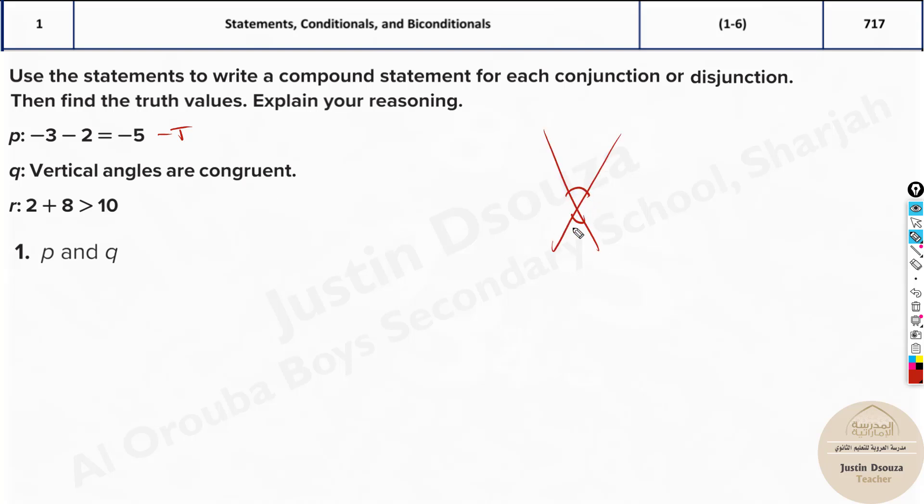Vertical angles are congruent. Are they congruent? Are these two angles congruent? Yes, they are equal to each other. So again, this is true. And 2 + 8 is 10. Is 10 greater than 10? See, if it was greater than or equal to, yes, that would be true. But here it is just greater than. No, it is false, right? Why? Because they are equal, not greater than. This is false. Other two are true.